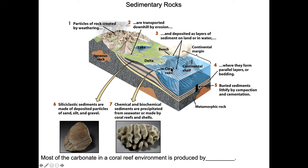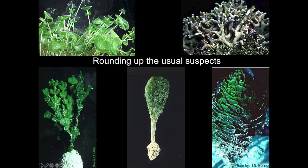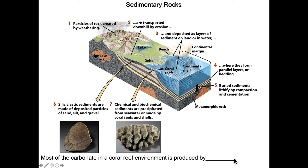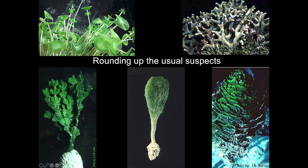If we simply evaporate seawater, we're going to concentrate the ions in that seawater, and eventually they're going to join up with other ions because there's no water molecules keeping them apart. Or plants and animals can grab the ions they want and build shells. This is a coral that in real life looks kind of like a baked potato. Most of the carbonate in a coral reef today is actually produced by algae — we call coral reefs coral reefs because of the large visible forms, but the real work is being done by little algae.